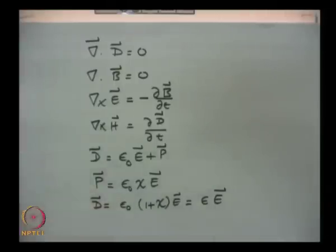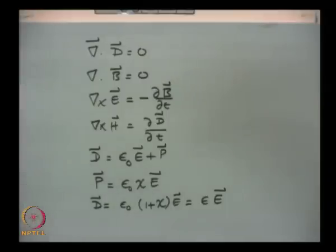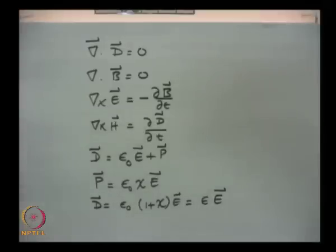In this course we will assume homogeneity — we will not look at inhomogeneous media — but we will remove the restrictions on linearity and isotropy. We will first look at anisotropic media in which D and E may not be parallel. Once we understand those properties, we will go into a system where P is no longer proportional to E — there can be higher order contributions in E.